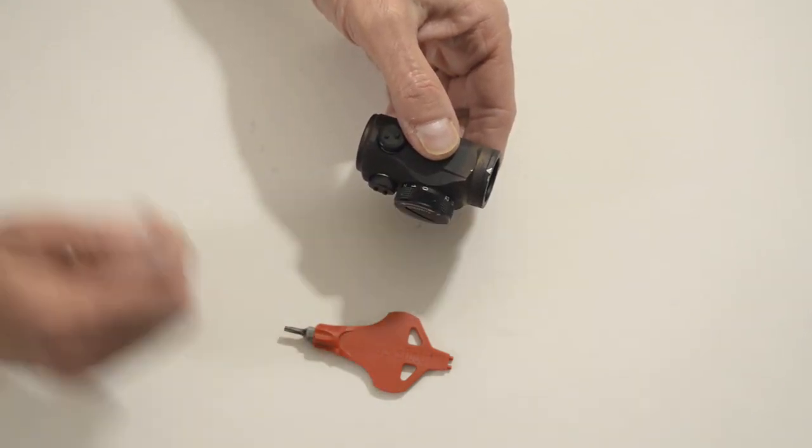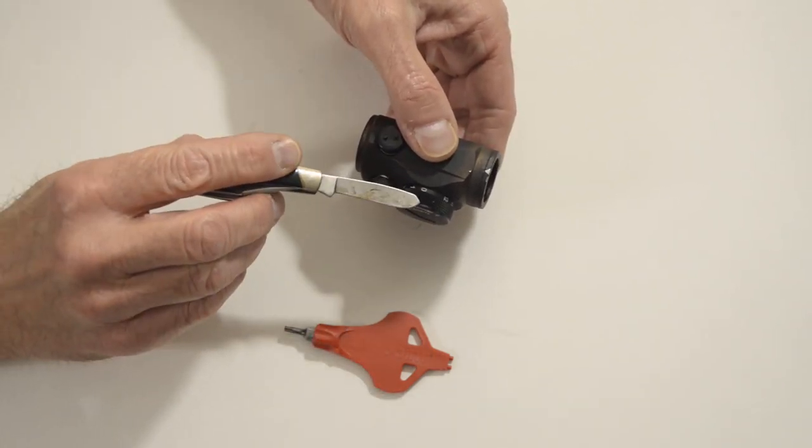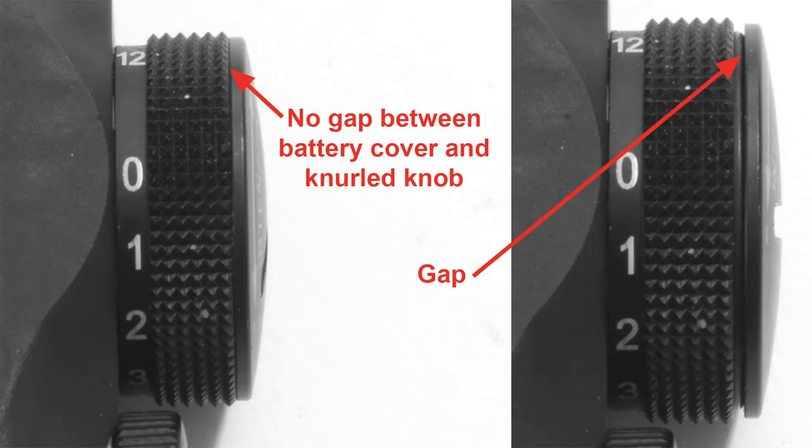When it's installed properly, there should not be any gap between the cover and the knob. If you see a gap like you do in the photo on the right, the cover is not tight enough.